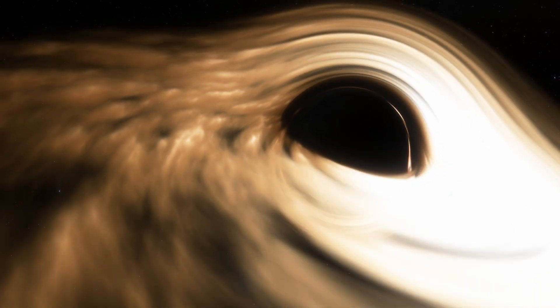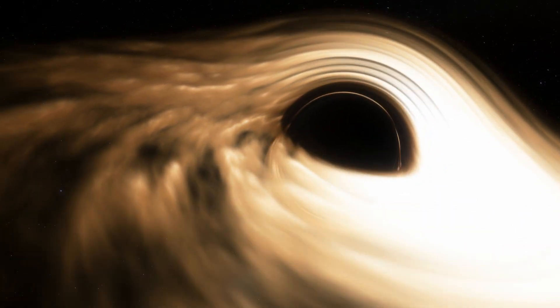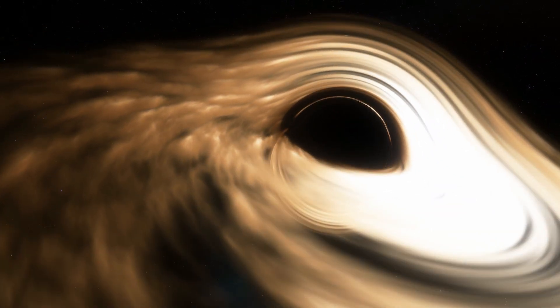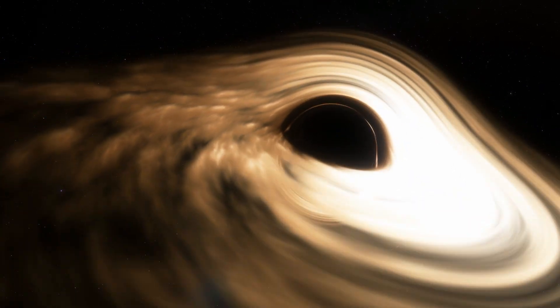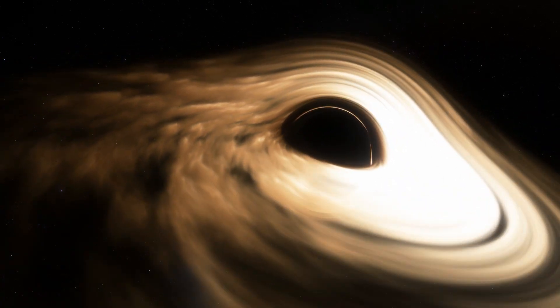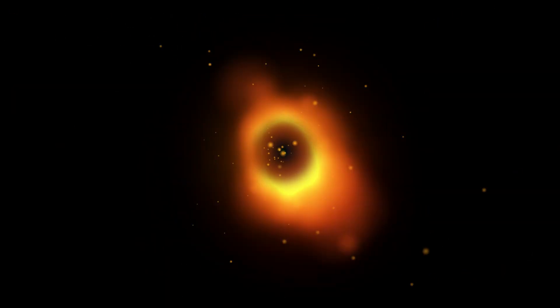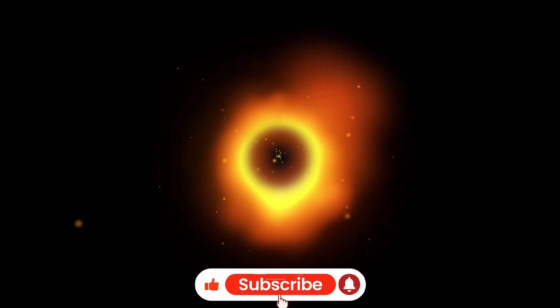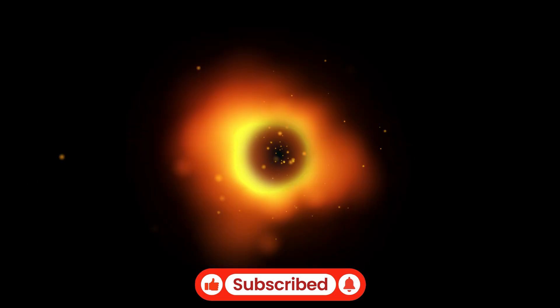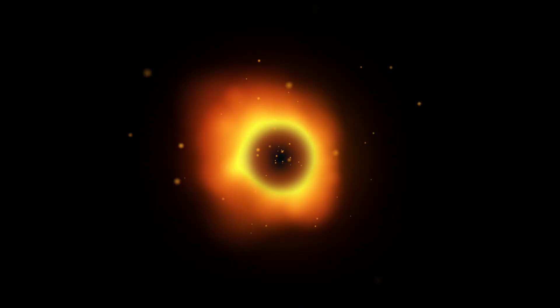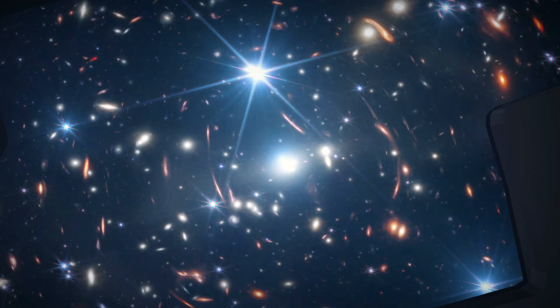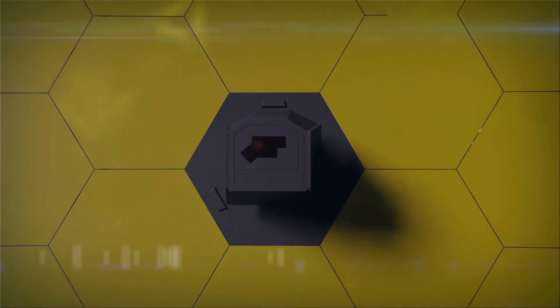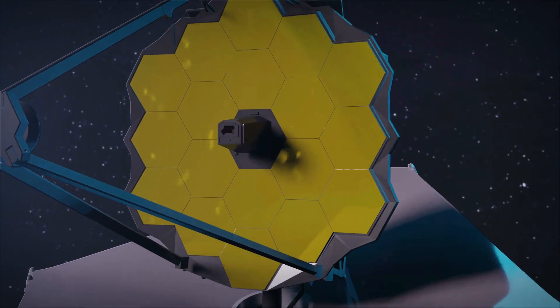Another hypothesis, still speculative but gaining attention, is that these could represent an entirely new kind of cosmic object. Some researchers call them black hole stars. Picture a black hole wrapped in a massive shroud of gas, a hybrid object blazing with both the power of a star and the hunger of a black hole. If that's true, then Webb may have uncovered the first evidence of a whole new class of astrophysical being.